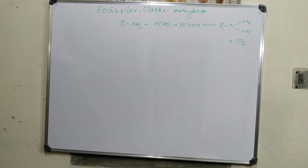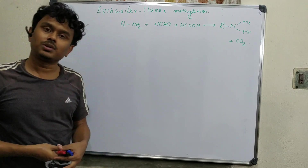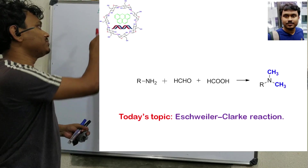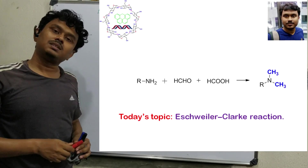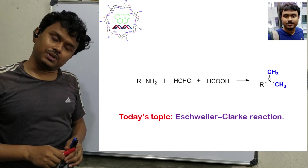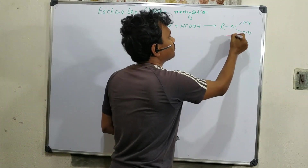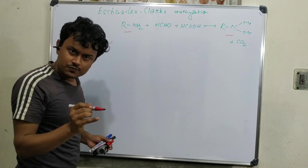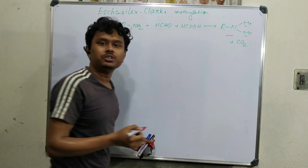Welcome friends. I am Tanmay and welcome you all to my channel, Chemistry and History of Molecules. Today I will explain a reaction named Eschweiler-Clarke Methylation. This is a strategy to prepare a tertiary amine from a primary amine — more specifically, a dimethyl-containing amine.